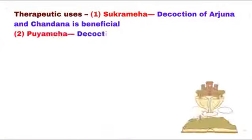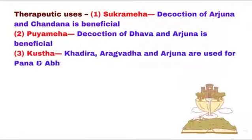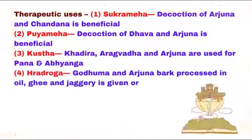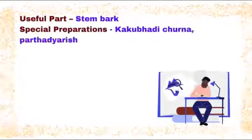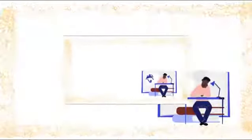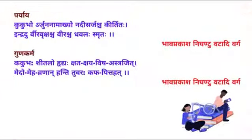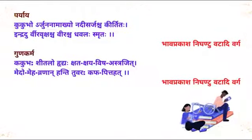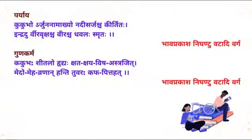Medicinal uses: Decoction of Dhava and Arjuna is beneficial in Meha. Arjuna is beneficial in Kushta. Khadira, Arangwada, and Arjuna are used for Pana and Abhyanga. In Rudroga, Godhuma and Arjuna bark are processed in oil, ghee, and Jatheri and given orally with milk. Useful part: Stem bark. Special preparations: Medo Meha, Vrana. Properties: Hanti Tuvara, Kapha Pittahara. Reference: Bhav Prakash Nighantu, Vatadi Varga.